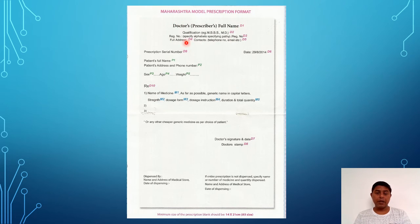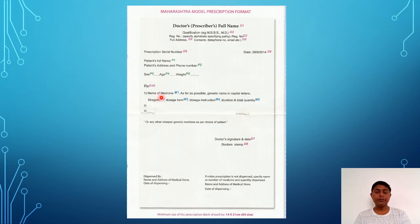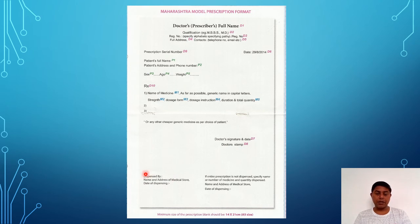The standard format includes the doctor or prescriber's name, qualification, registration number, address with phone number, date, prescription serial number, and patient's information. Then the superscription (Rx), the name of the medicament with dose quantity, strength, and dosage form are all to be mentioned. The doctor's signature with date and stamp must be put on the prescription, followed by the dispensing pharmacist's details. This is the typical prescription format to be maintained by the prescriber.